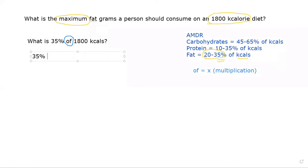In other words we are looking at the equation 35 percent times 1800 calories is equal to what? So the 35 percent would be a .35 multiplied by 1800 and that equals 630 calories.